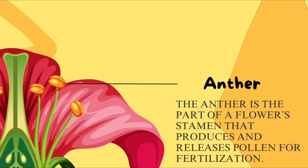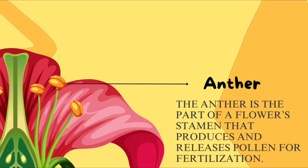This part of a flower is called anther. The anther is the part of a flower's stamen that produces and releases pollen for fertilization.